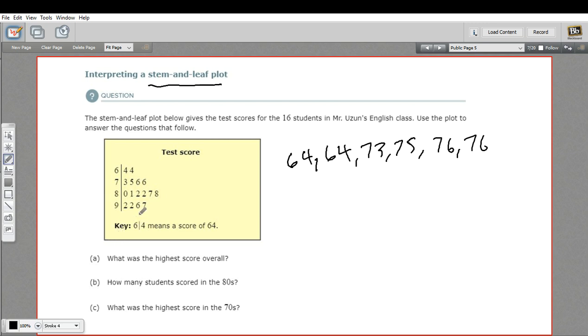Let's see if we can answer these questions now that we kind of understand this group of numbers. A says, what was the highest score overall? Well, the highest score is going to be 90 something. So I go down to the nine and then I find the highest number here. That's a seven. So that is 97. That's the highest overall score.